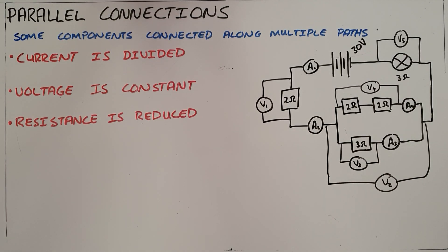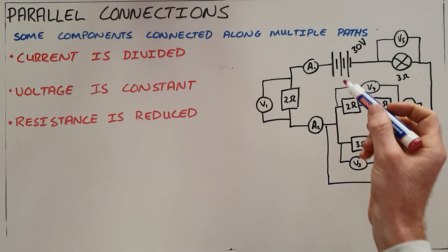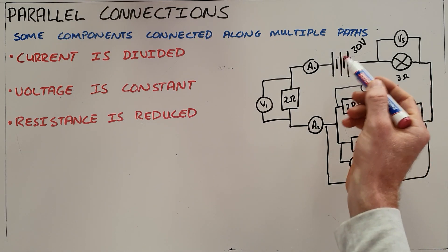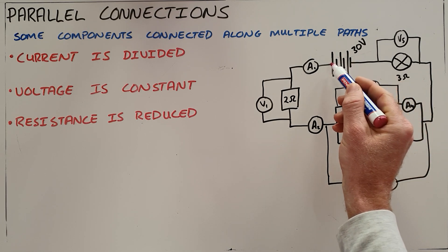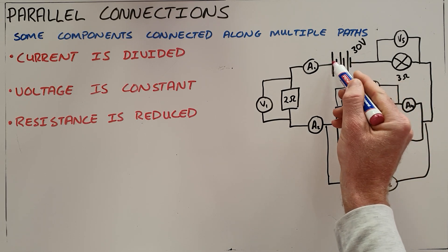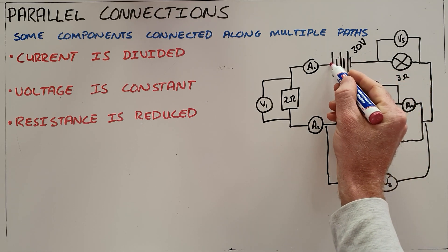A parallel connection is one in which some components are connected along multiple paths. This contrasts with a series connection, which is one in which the current is required to follow a single path.